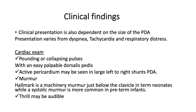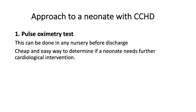Clinical findings also depend on the size of the PDA. Presentation varies from dyspnea to tachycardia to respiratory distress. On cardiac exam, they may present with a collapsing pulse, an easily palpable dorsalis pedis, an active precordium if there is a large left-to-right shunt, and a murmur. The hallmark is usually a machinery murmur in term neonates, just below the clavicle, while a systolic murmur is more common in preterm infants. A thrill may also be audible.